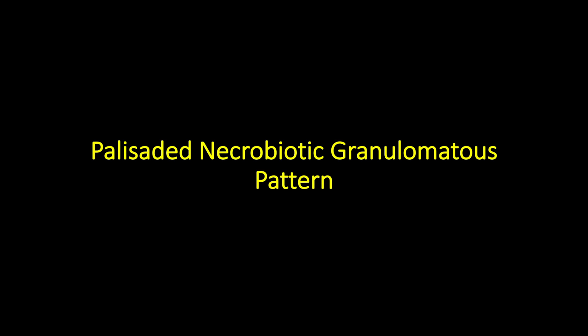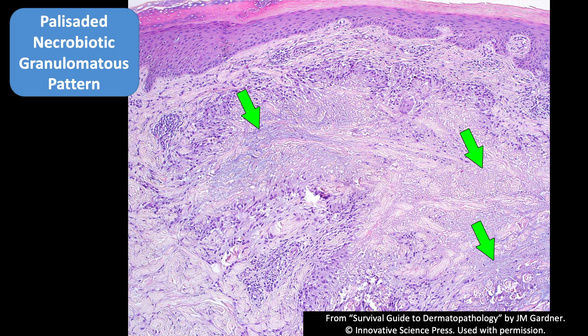This pattern is a variation of granulomatous called palisaded necrobiotic granulomatous pattern, and there's a handful of diseases in here. This case has these palisades — a wall of histiocytes — around a central zone that's not really necrosis like in a mycobacterial infection, but actually degeneration of collagen, often with some bluish myxoid or mucin change in the middle.